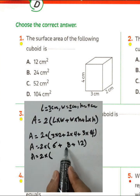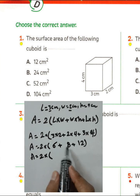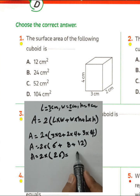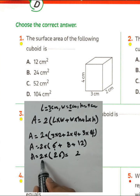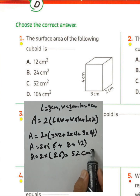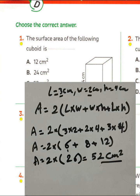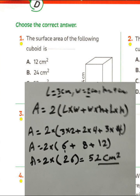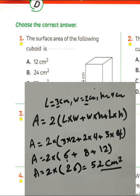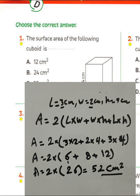Then 6 plus 8 plus 12 equals 26, and 2 times 26 equals 52. The surface area will be 52 square centimeters. We use this rule: find the three products, sum them, and multiply by 2.